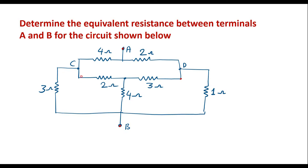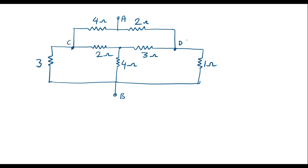Here we can observe that this point and this point are the same, and this point and this point are the same. So I will push these together and redraw the circuit. In this circuit we can observe that neither any resistances are in series nor in parallel, so it is very difficult to simplify this. In such cases we need to go for star-delta transformation.